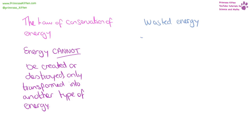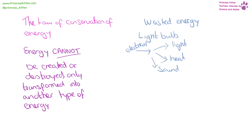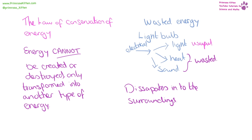While energy cannot be created or destroyed, it can be wasted. Wasted energy is any energy that comes out of a situation that we didn't intend. For example, in a light bulb we have electrical energy going in — this is converted into light, heat, and sound. The light is the useful energy, whereas the heat and the sound are wasted energy. A worthy description is that wasted energy dissipates into the surroundings — it spreads out so much it can't be collected and used. It's not gone, it's just dissipated.